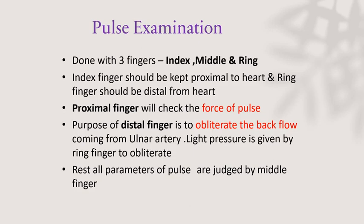The parameters of the pulse — rate, rhythm, volume, character, delay — are all judged by the middle finger. The index or proximal finger checks the force of the pulse, the ring or distal finger obliterates the back flow from the ulnar artery, and all remaining parameters are judged by the middle finger. So the middle finger is the main one; the other two are just supporting.